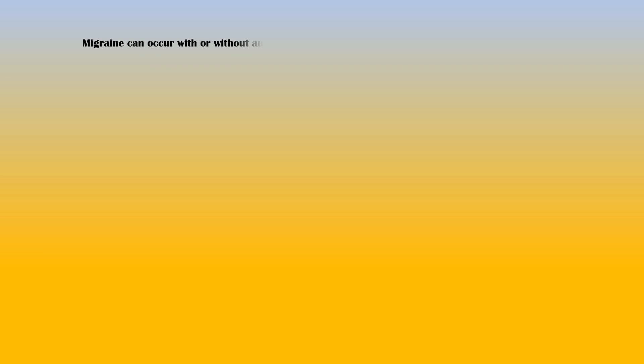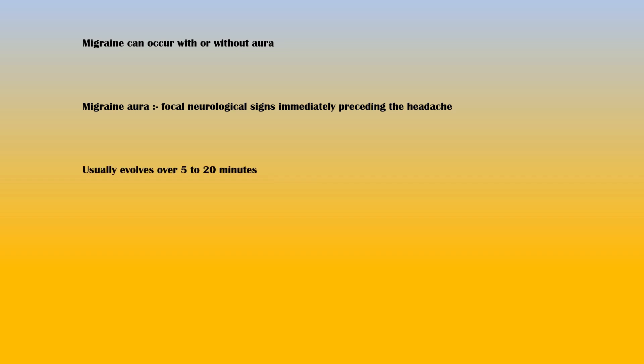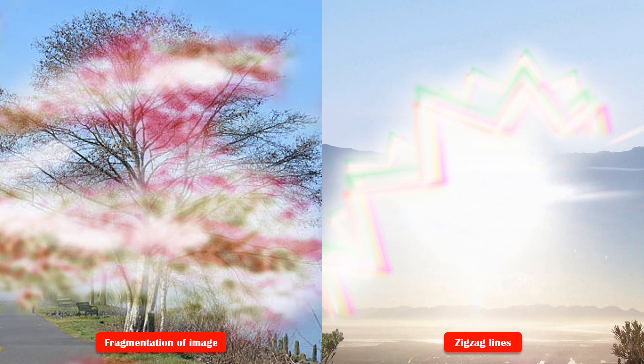Migraine can occur with or without aura. Migraine aura is defined as focal neurological signs immediately preceding the headache. It usually evolves over 5 to 20 minutes, followed immediately by the headache phase. Visual aura is the most common type, and patients typically see zigzag lines or fragmentation of the image, like looking through a pane of broken glass. Sensory symptoms such as tingling may also be present.